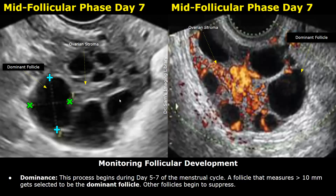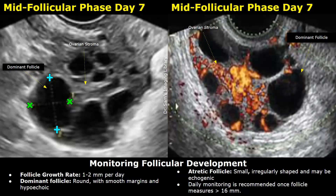During days five to seven, the process of dominance begins. At this stage, the follicle that measures greater than 10 millimeters gets selected to be the dominant follicle. You will start to notice one larger follicle — the one most likely to become dominant. However, sometimes a follicle that appears largest during days three to seven may not always become the dominant follicle, as another follicle can quickly start growing later on. At this stage, the growth rate is one to two millimeters per day.